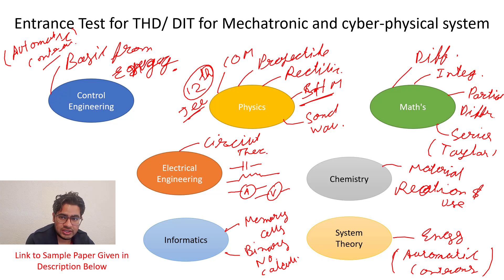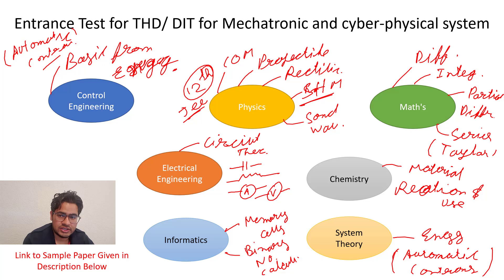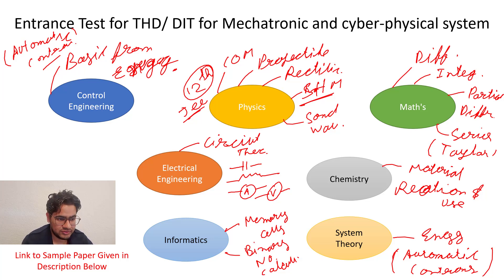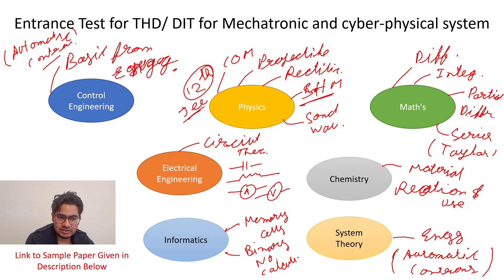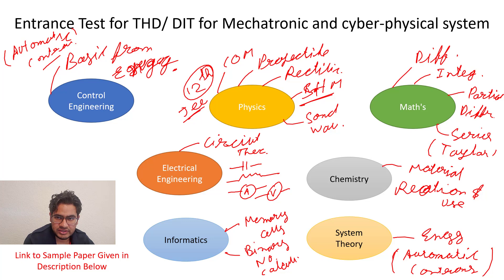In the Controlling and System Theory sections, these two are covered under Automatic Control, which you studied in your bachelor's — around the sixth, seventh, or eighth semester, it varies from university to university. For the basics of automatic controls, you have to prepare for these two sections.